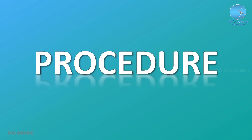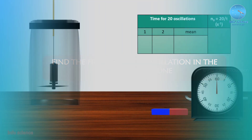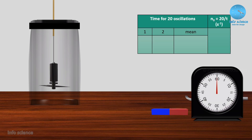Now we are moving to the procedure of this experiment. First, we are going to find the frequency of oscillation in the earth field alone. We are going to arrange the vibration magnetometer and find the frequency of oscillation.